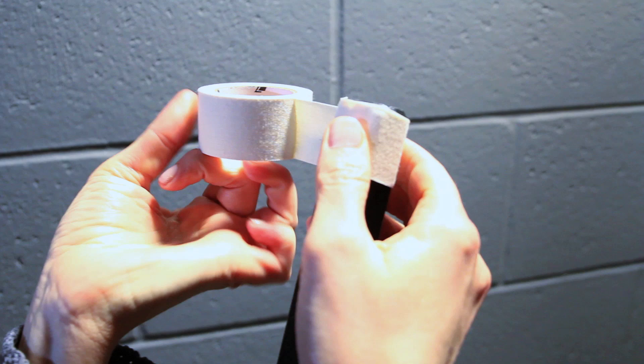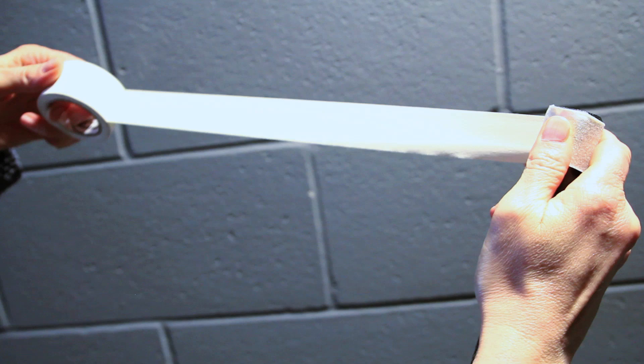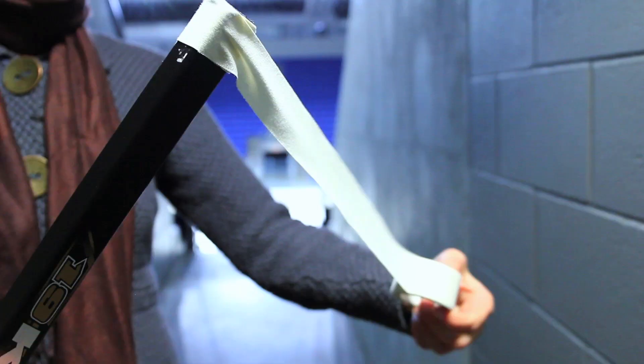The first thing we're going to do to make the grip handle on the end of our hockey stick is take our hockey tape and simply wrap it around the end of the stick two times. Once we've gone around twice, I'm going to pull my tape out about a foot and a half, and we're going to take the roll and send it spinning.